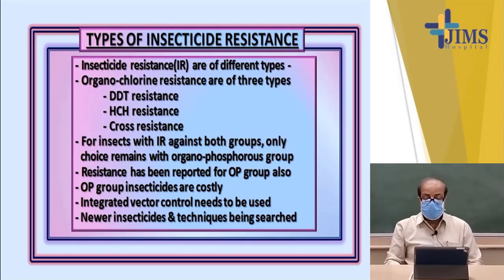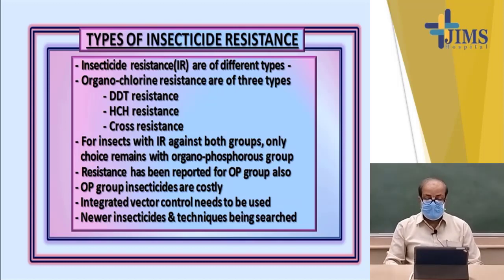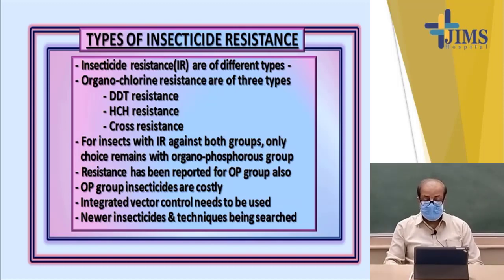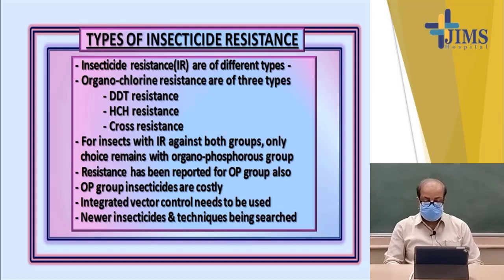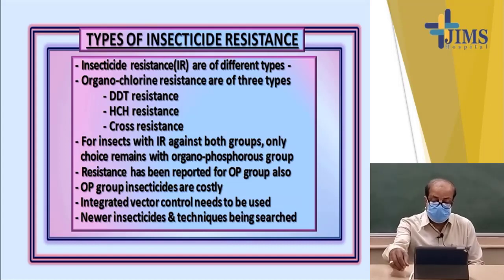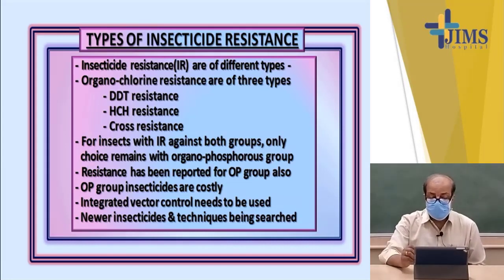There are three types of insecticide resistance. Among organochlorine insecticide resistance, there is DDT resistance, HCH resistance, and cross resistance. For insects with resistance against both groups, the only choice remaining is to spray with the organophosphorus group of compounds. Resistance has been reported even for the OP group. OP group insecticides are very costly, and if insects develop resistance against the OP group, there is no other way than to resort to other kinds of techniques. Integrated vector control needs to be used, and newer insecticides and techniques are being developed.